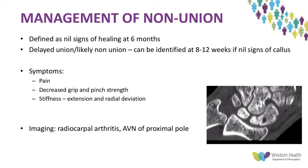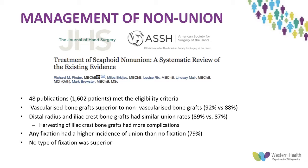Moving on to non-union: this is defined as no signs of healing at six months. Likely progression to non-union can be identified at two to three months if there is no callus on imaging. Symptoms include pain, decreased grip and pinch strength, and wrist stiffness especially with extension and radial deviation. Imaging can show radiocarpal arthritis or avascular necrosis of the proximal pole.